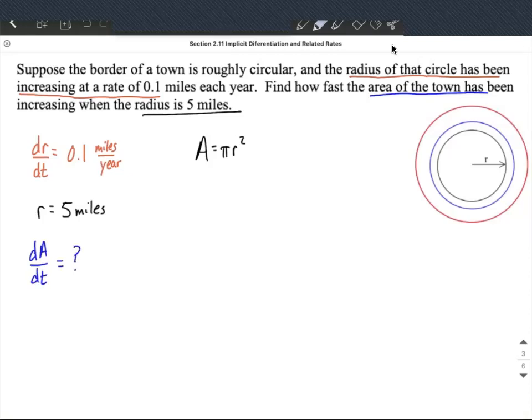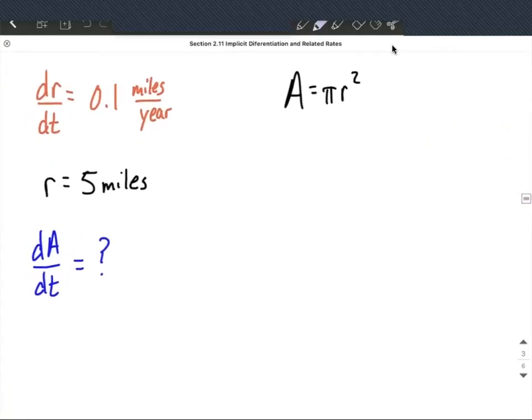So a lot of times just listing out at the beginning, reading through a couple times, listing out everything you know, and then finding the formula that connects together the two things that you are given, right? A radius and an area in our case. So what we're going to do is take the derivative of this area formula with respect to time.